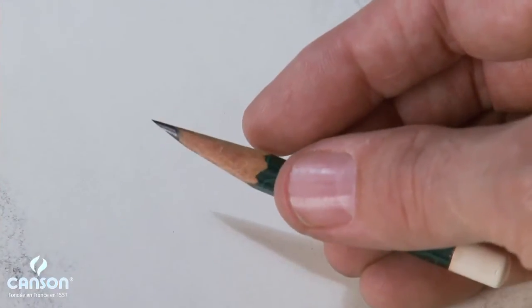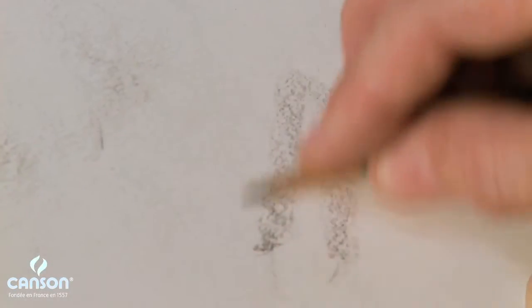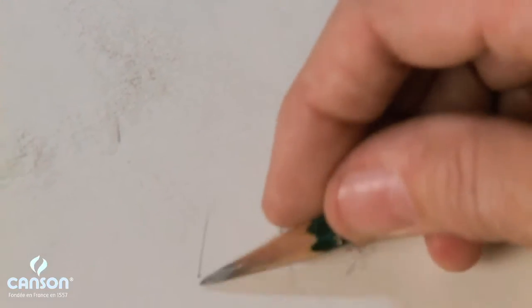So if I hold the pencil now on the flattened side, I get a broad smooth stroke. If I hold the pencil on the opposite side, I get a fine line.